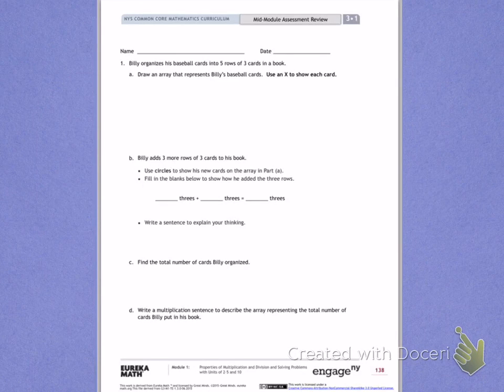This is the mid-module review, side one. In the first part of our module, we have practiced learning properties of multiplication and division and solving problems with units 2 through 5 and 10.